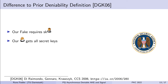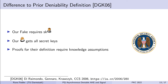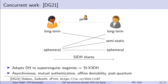Another downside of the definition by Di Raimondo et al. is that proofs for their definition require some form of knowledge assumptions in all cases known to us. There is also concurrent work by Dobson and Galbraith, who have lifted the Extended Triple Diffie-Hellman protocol to the setting of supersingular isogenies. They follow the same blueprint but rely on isogeny problems instead of the Diffie-Hellman problem. With this they retain the same properties but additionally get quantum resistance.